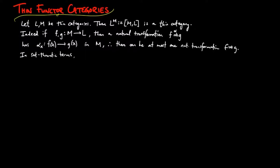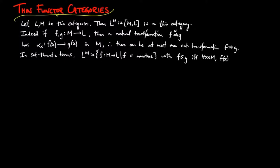In set-theoretic terms, L to the M is defined as those set maps from M to L such that F is monotone, as an order morphism. With F ≤ G if and only if, for each x in M, F(x) ≤ G(x).